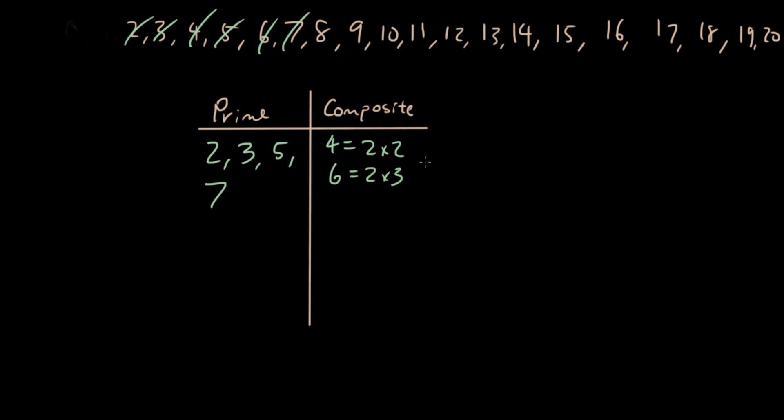Actually, anything that's even, I'm just going to put it in composite. Okay, so 18, 12, 14, 16, 20. All those numbers can go in here because they can all be divided by 2.